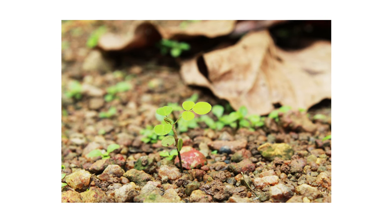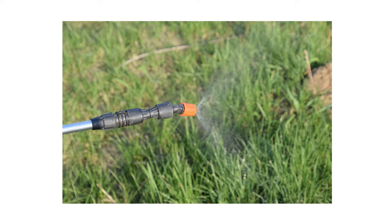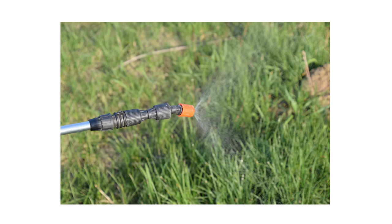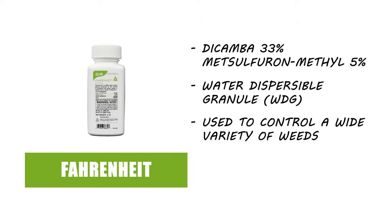To eliminate beggar weed from your lawn, the best method of control is to use a post-emergent herbicide that's labeled not to injure your turf grass. In warm-season lawns, we recommend Fahrenheit herbicide. Fahrenheit is a dicamba and metsulfuron methyl-based water-soluble granule that delivers broad-spectrum control of annual and perennial broadleaf weeds in commercial and residential properties.